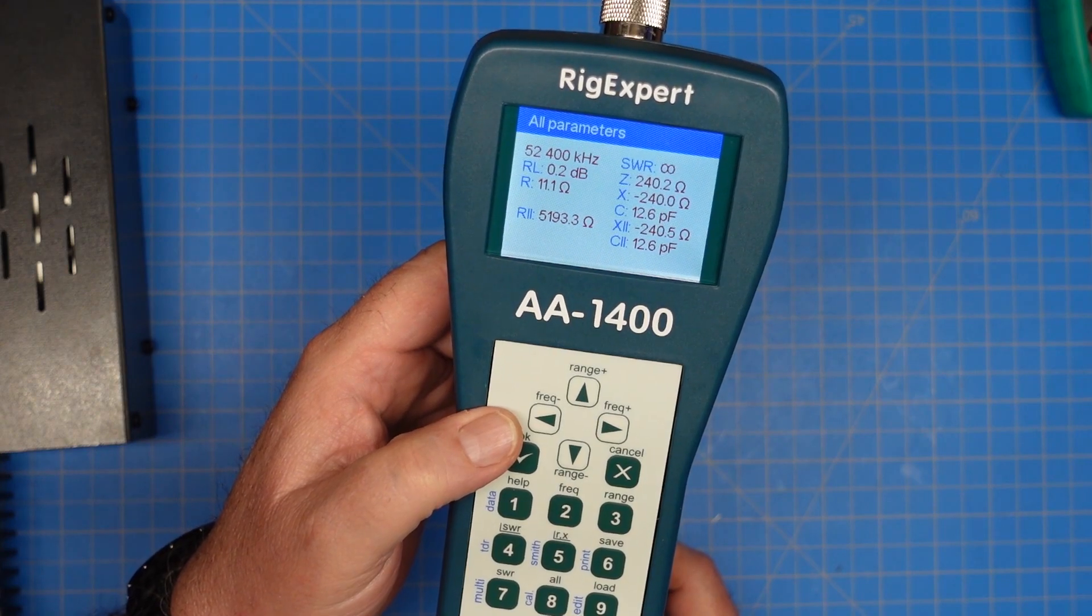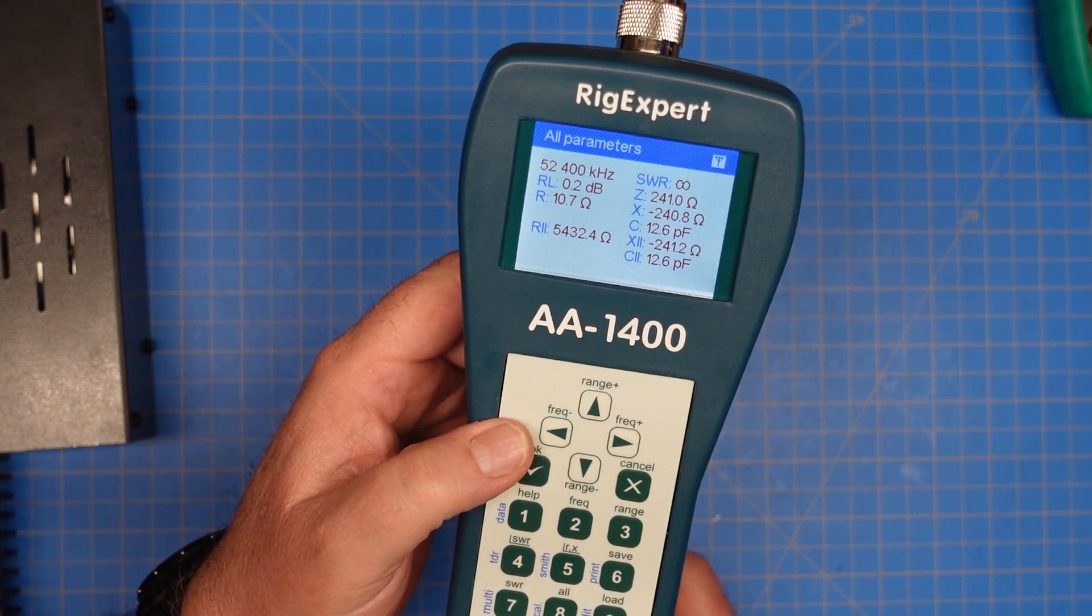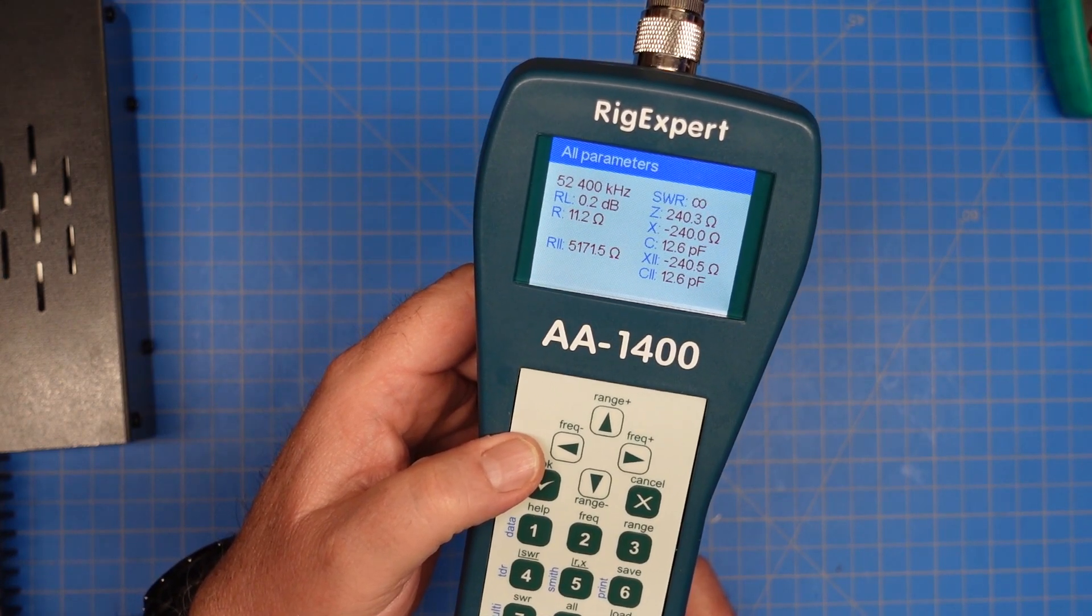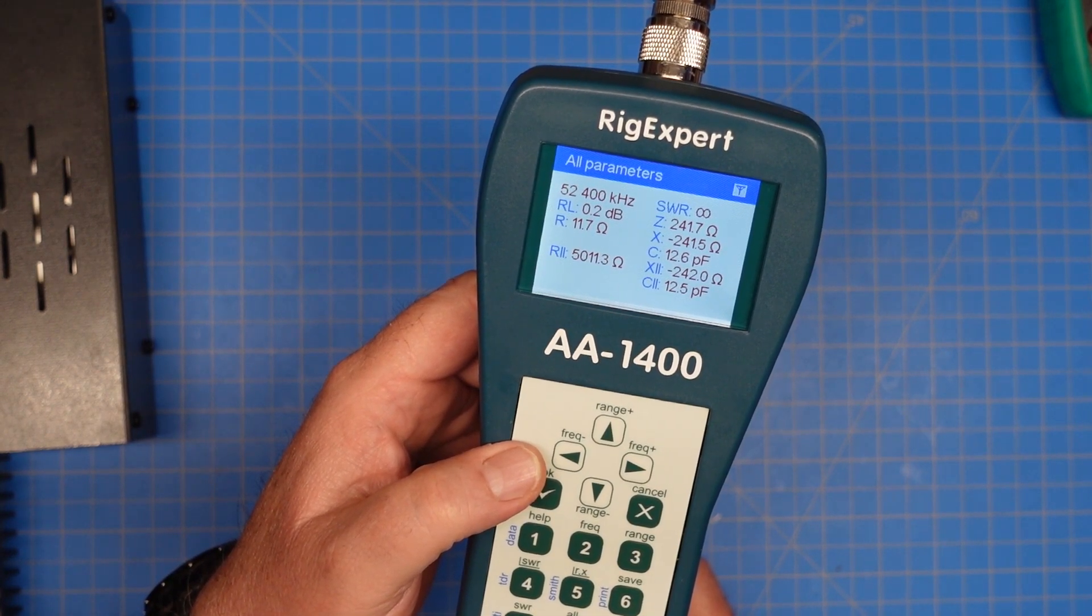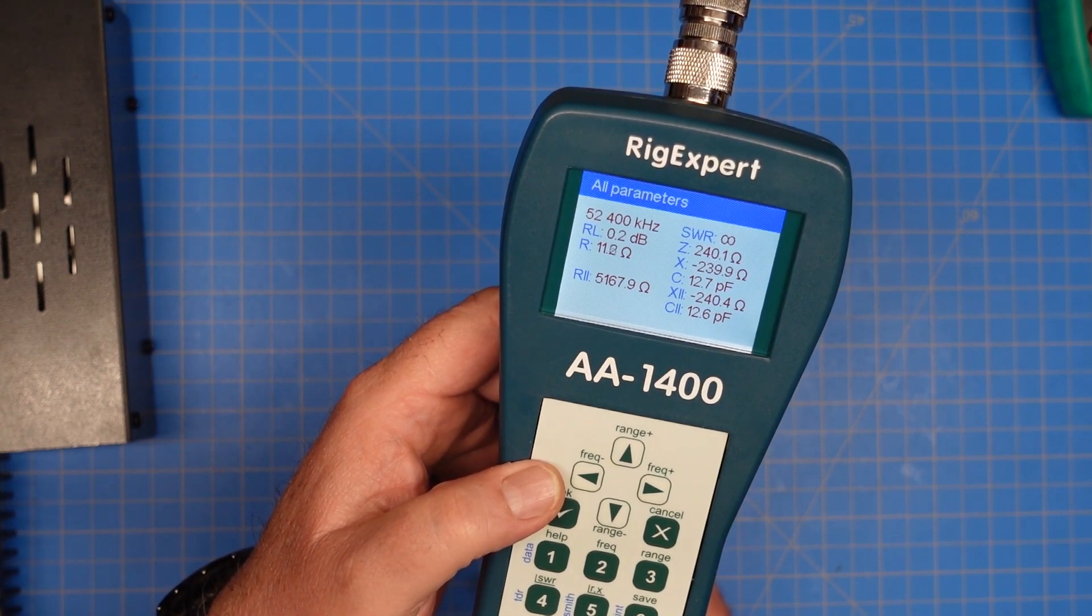So I've got this set to 6 meters right now. And you can see it's showing an SWR of infinity, 240 ohms of impedance, and 11.2 ohms of resistance. So that is no bueno.